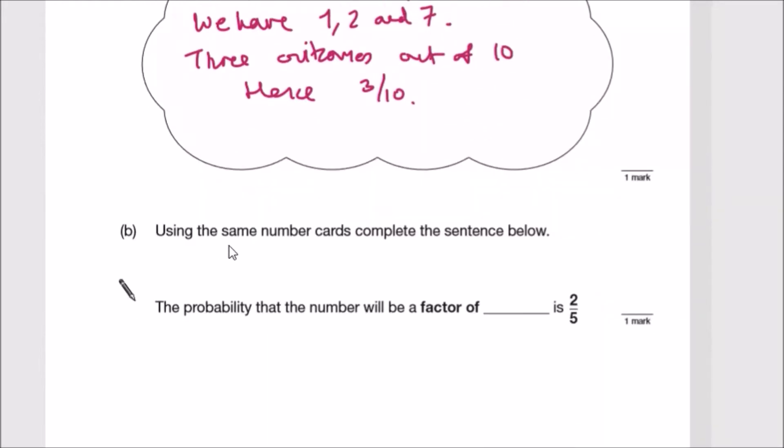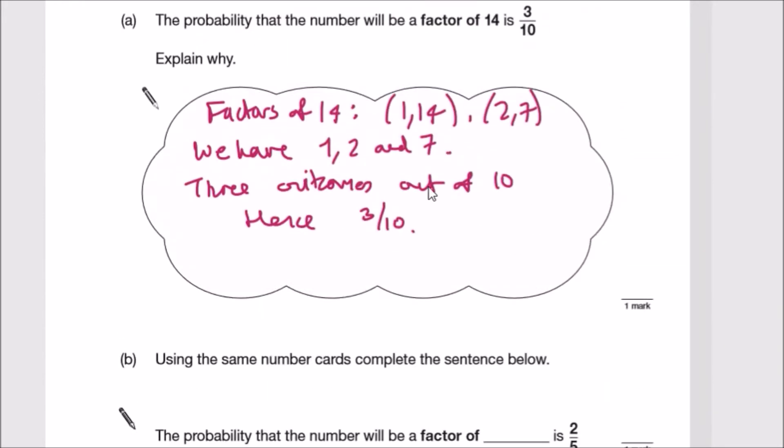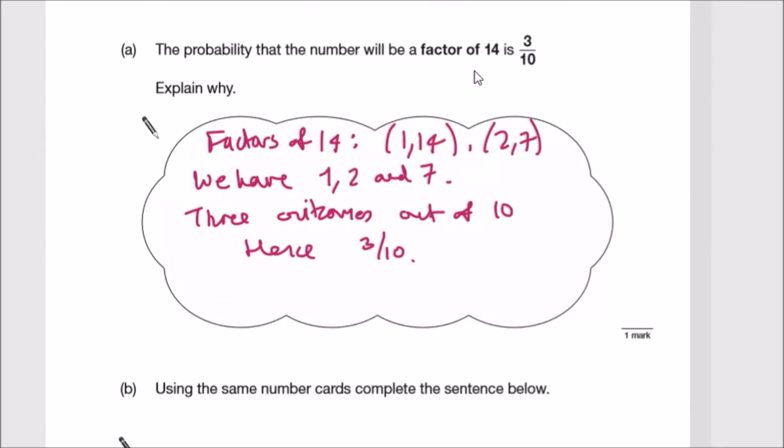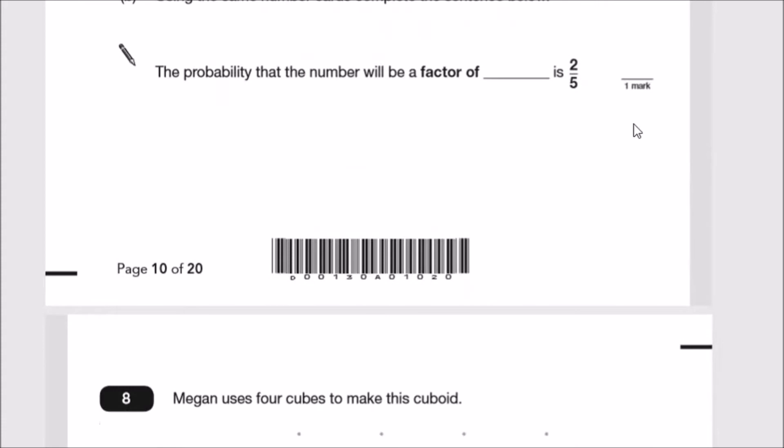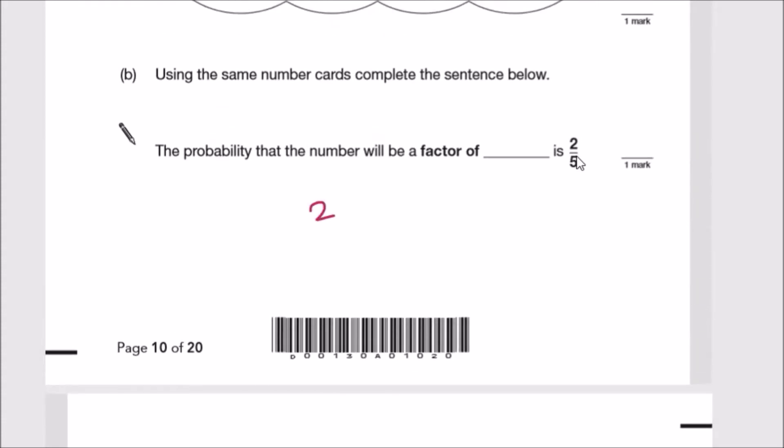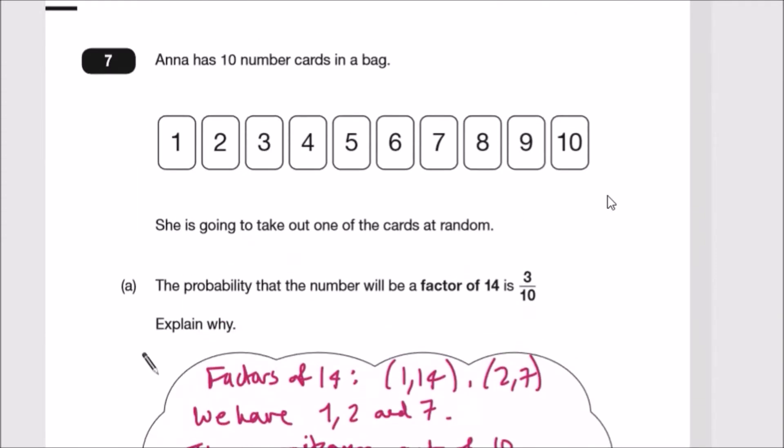Part B: Using the same number cards, complete the sentence. The probability that the number will be a factor of something is two fifths. Two fifths is identical to four tenths, so we need to pick four cards. Looking carefully, let's find multiples.